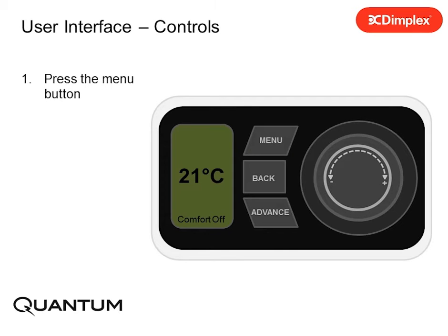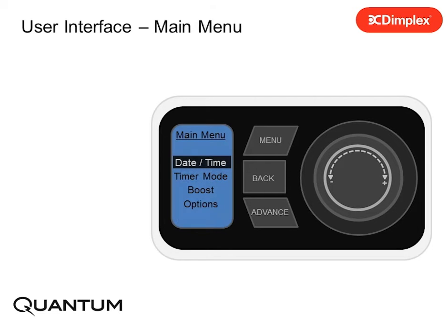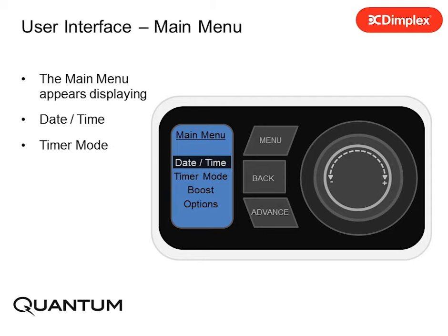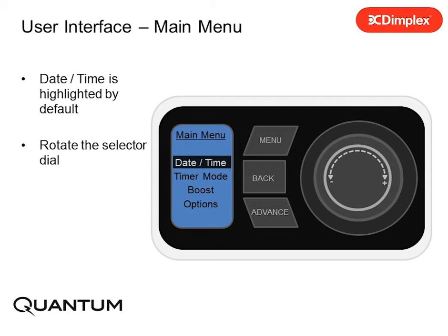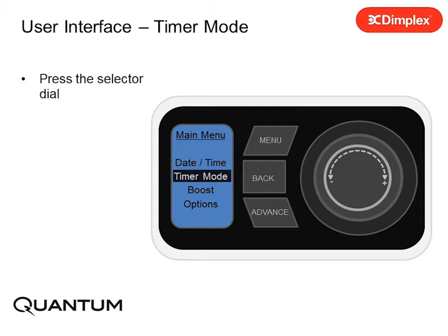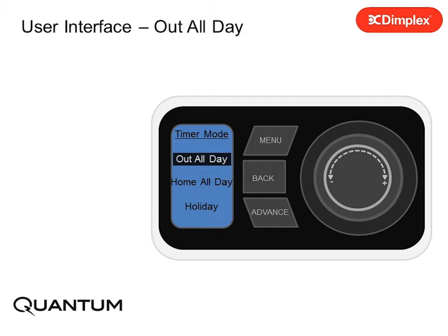Press the Menu button. The main menu appears. Date and time is highlighted by default. Rotate the selector dial to highlight Timer Mode, then press the selector dial.